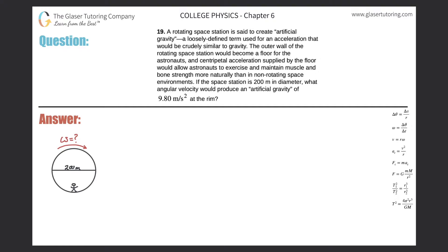The outer wall of the rotating space station would become a floor for the astronauts, and centripetal acceleration supplied by the floor would allow astronauts to exercise and maintain muscle and bone strength more naturally than in non-rotating space environments. If the space station is 200 meters in diameter, what angular velocity would produce an artificial gravity of 9.8 meters per second squared at the rim?